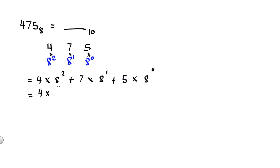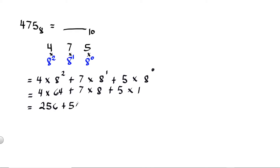Next is to simplify: 4 times 8 raised to 2, where 8 times 8 is equal to 64, plus 7 times 8 raised to 1, where 8 times 1 is equal to 8, plus 5 times 8 raised to 0, which equals 1 — any number raised to 0 is equal to 1. So 4 times 64 is equal to 256, plus 7 times 8 is equal to 56, plus 5 times 1 is equal to 5. Then 256 plus 56 is equal to 312, plus 5, and 312 plus 5 is equal to 317.